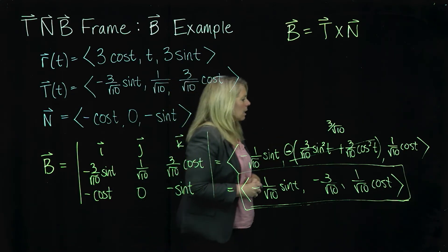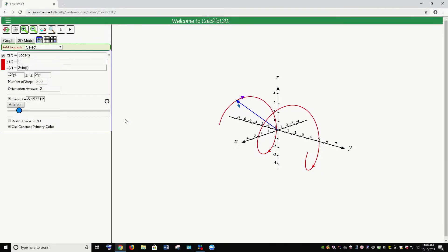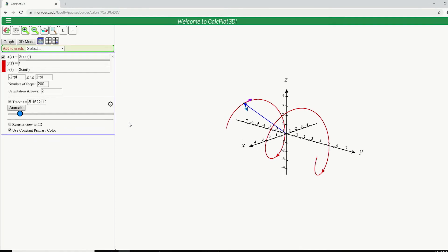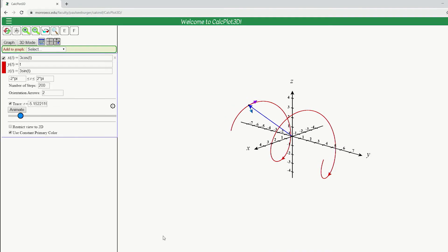All right. We're going to go look at this on the computer here. So here I have the same curve that we looked at previously. And I've got the graph of the curve, and I've got the vectors that we looked at previously.